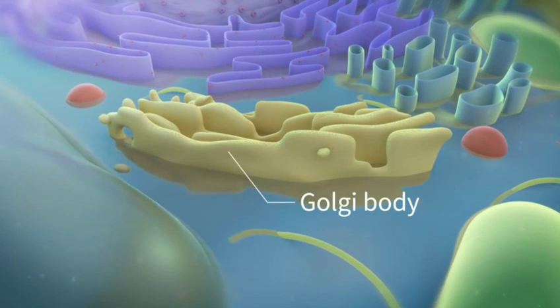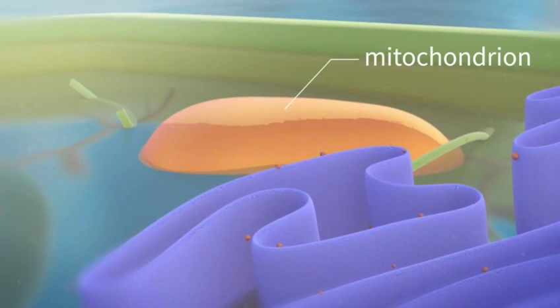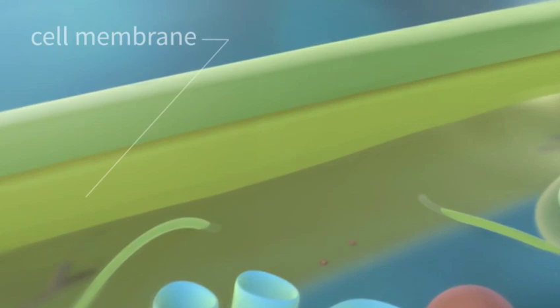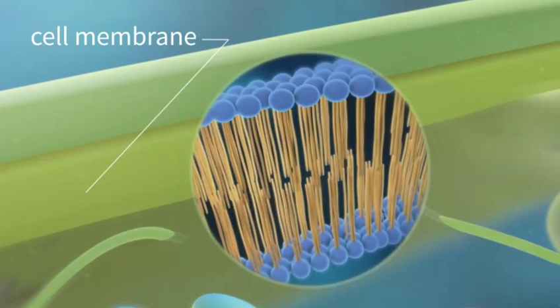Among the more complex organelles are the mitochondria, in which cellular respiration takes place. Their number, size and shape vary depending on the cell type. Each plant cell is surrounded by a cell membrane. It acts as a barrier separating the cell from the external environment.